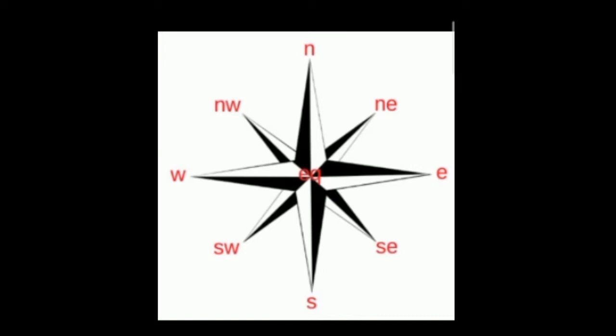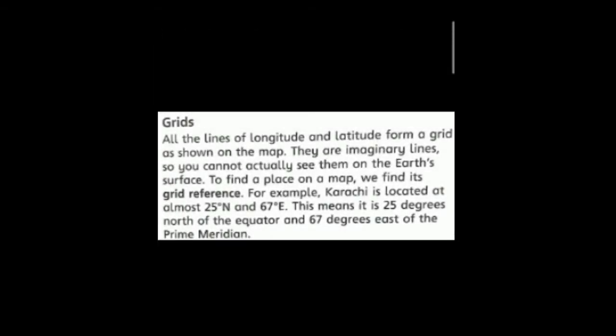Now the next heading is grids. All the lines of longitude and latitude form a grid, as shown on the map. There are imaginary lines, so we can't actually see them on the earth's surface.